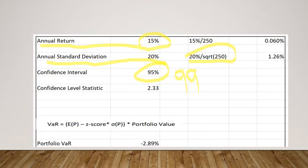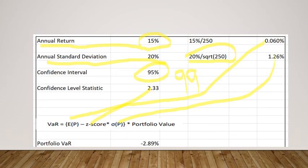We are using a confidence interval of 99% and the confidence level statistic is 2.33. With these three data points, the solution is: EP (daily expected return = 0.06%) minus z-score (2.33) multiplied by sigma of the portfolio (1.26%), multiplied by the portfolio value of 100 million. Never forget to convert annual returns into daily returns by dividing by the number of trading days — either 250 or 252 — and convert annual standard deviation by dividing by SQRT(250).